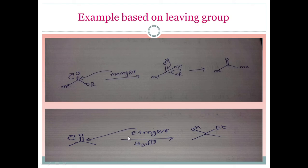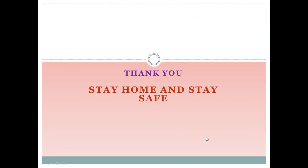Here also RMgX is taken — instead of methyl, ethyl is used, but it doesn't matter. It attacks, the bond gets pushed up, and we get the same intermediate. However, this intermediate won't be stable, but after adding water to the reaction, H is provided and gets attached, giving us the final product. Thank you — I hope you understood the concept. If you have any doubt, or if you liked the video, please give a thumbs up, share, and subscribe to the channel. Stay home, stay safe.